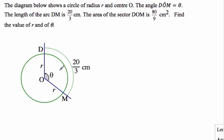We're given this circle with radius R, and the center is O. D-O-M is theta. Arc length D-M is 20 over 3 centimeters, and the area of the sector, so the whole sector here, is 80 over 9 centimeters squared. Find the values of R and theta.